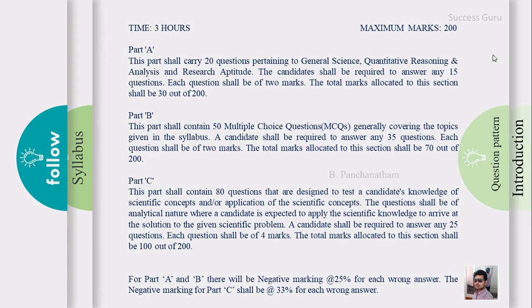For Part C, there are 80 questions and the candidate must attempt a minimum of 25 questions. Each question carries 4 marks, so the total allotted mark for this section is 100. There are negative marks in Part A and Part B — the negative marking is 25%, meaning a deduction of 0.5 marks per wrong answer. For Part C, the negative marking is 33%, so a wrong answer results in a deduction of approximately 1.33 marks.